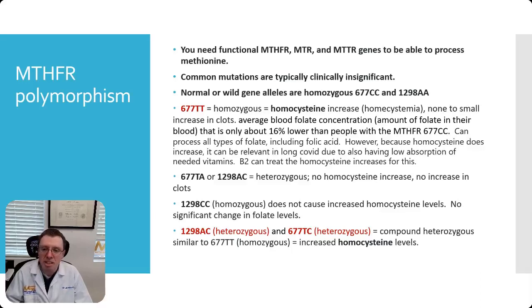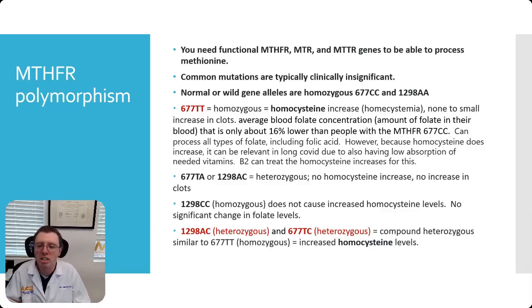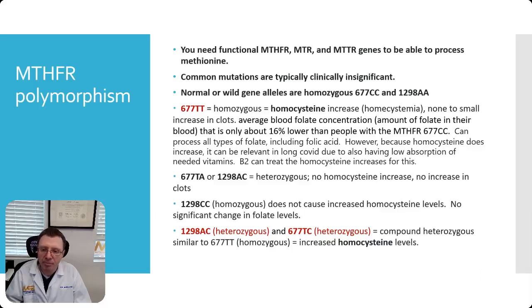What's interesting is that the most common mutations are usually clinically insignificant in the normal population — people without long COVID. The normal or wild alleles are homozygous 677CC, and that means cytosine — that's the normal spot at position 677 in the sequence. The most common polymorphism or mutation is at 677, where the cytosine becomes thymine — a T — and it's homozygous.